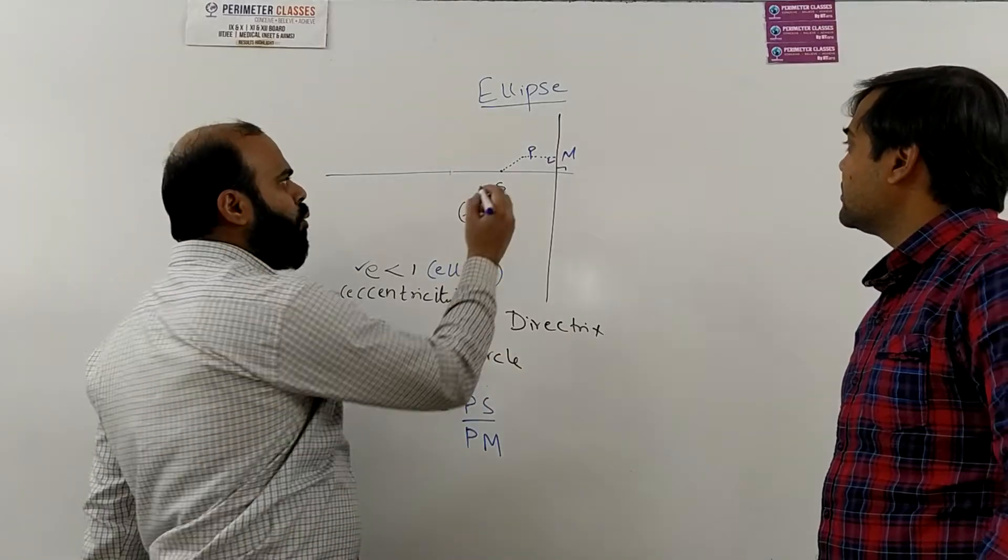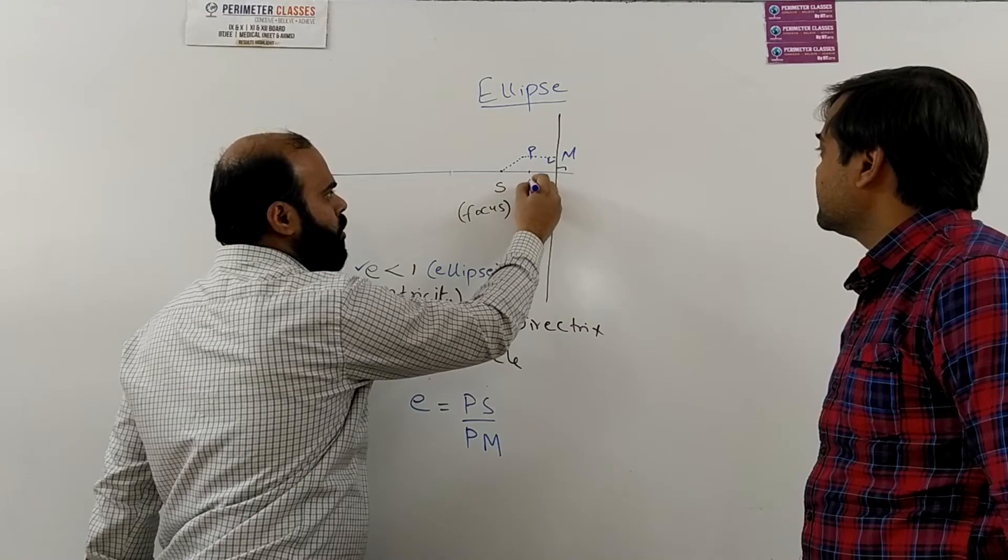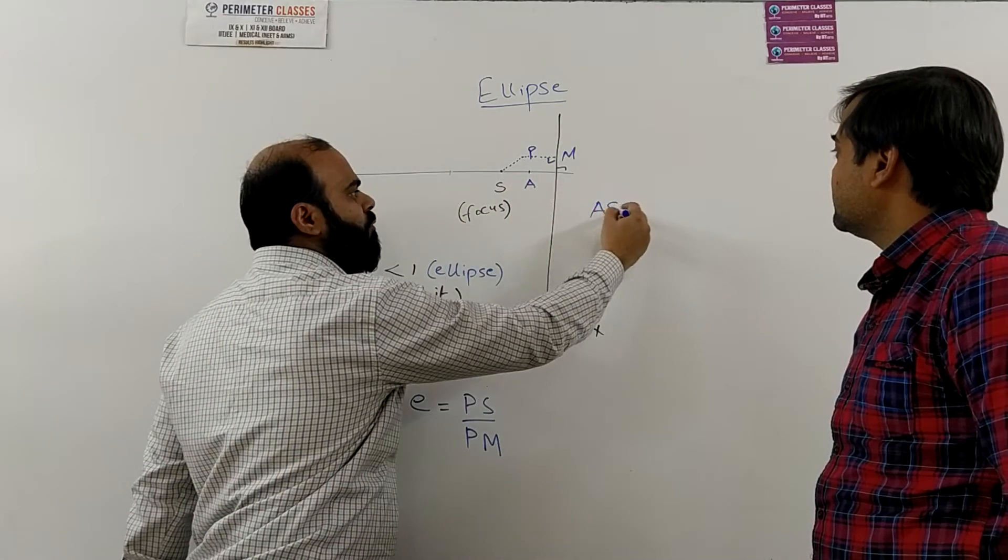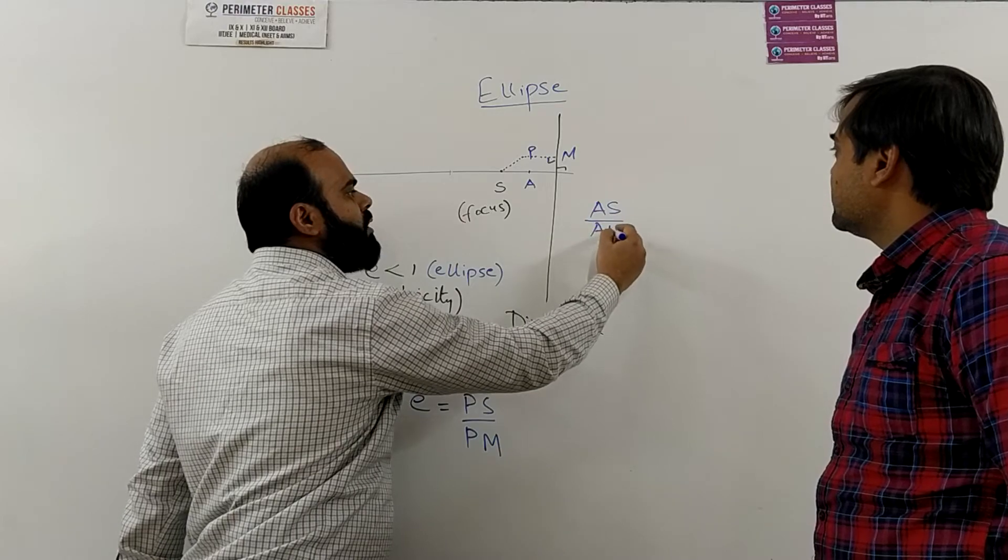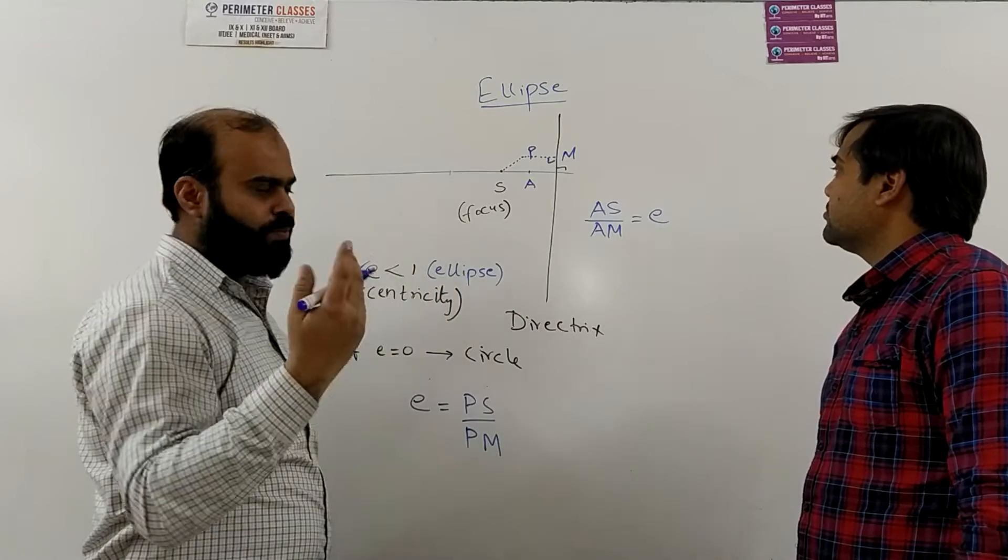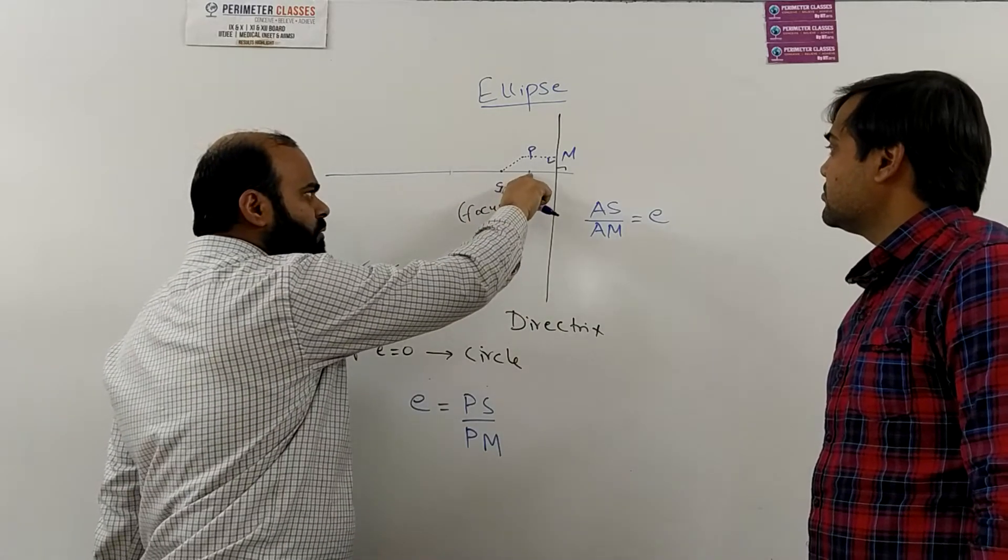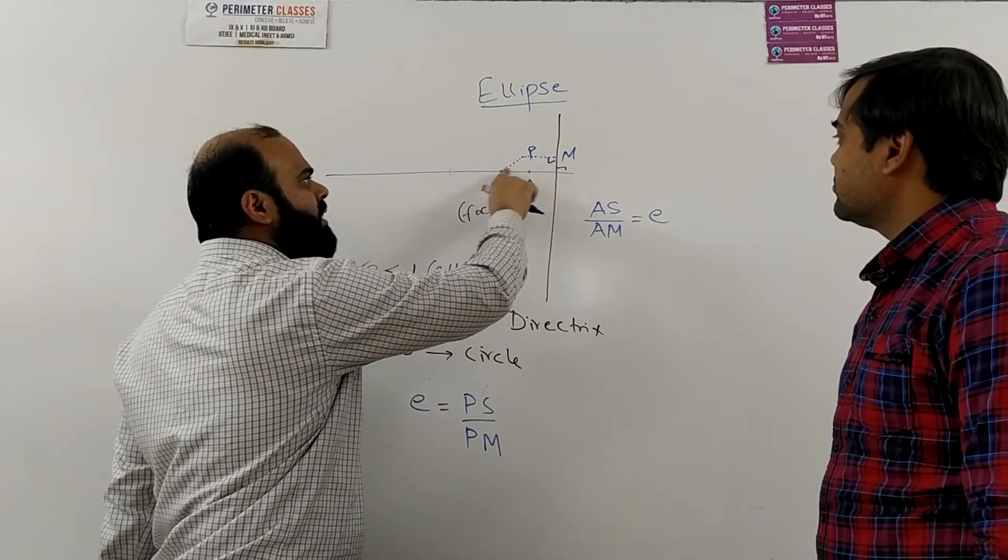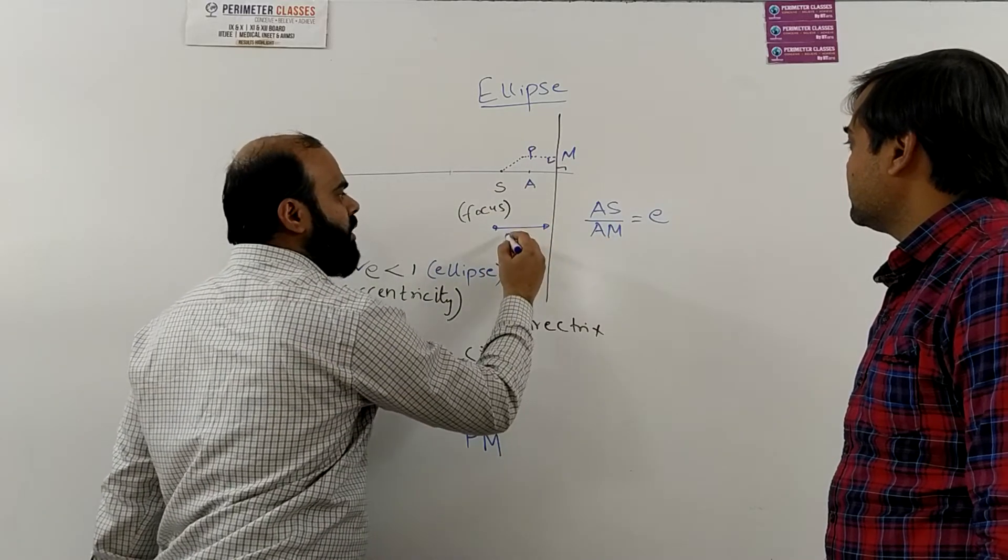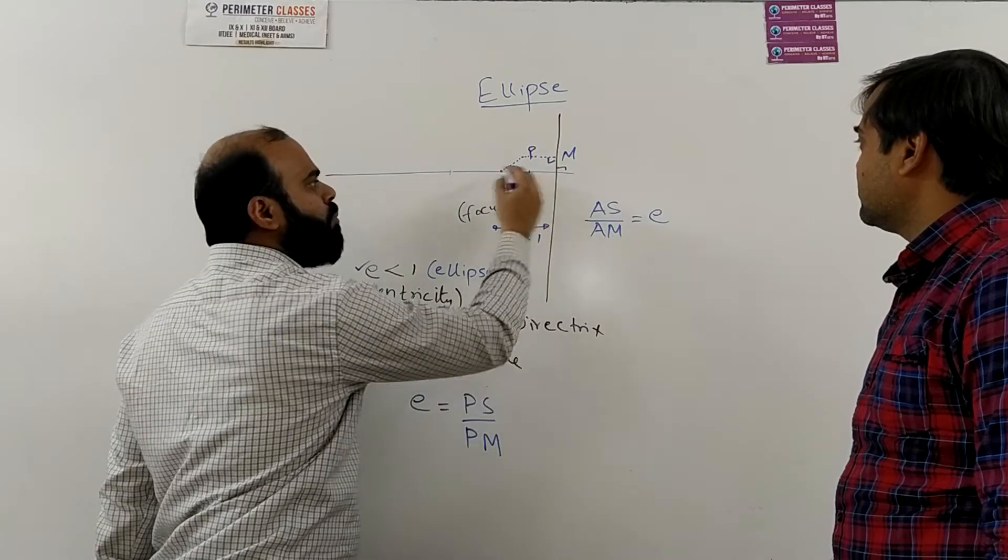What we do here: we take a point A on this line such that distance of A from S and distance of A from M will have a ratio e, whatever e is given. There is not only one point which divides this portion in the ratio e is to 1. There is not only one point on this line.